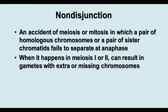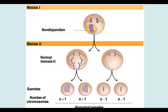Sometimes there's an accident in meiosis — more often than in mitosis — where a pair of homologous chromosomes or sister chromatids doesn't separate properly at anaphase, called nondisjunction. When it happens in meiosis I, a pair of homologous chromosomes fails to separate, and in the second meiotic division they separate abnormally. This results in some gametes with extra chromosomes and some with fewer. All of these are abnormal gametes, and sometimes this results in failure to form a zygote, or it leads to birth defects.